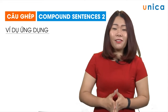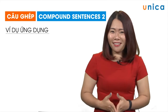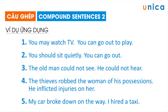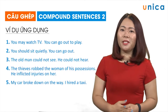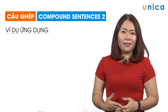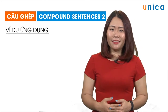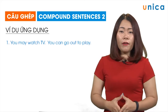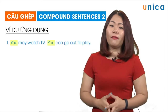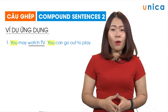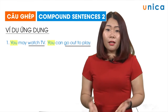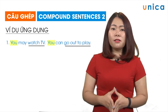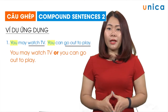Và bây giờ chúng ta hãy cùng thực hành thêm một vài ví dụ nữa nhé. Đừng quên rằng chúng ta phải thực hành càng nhiều thì càng nhớ được lâu. Hãy nối các cặp câu đơn sau để có một câu ghép. Ví dụ số một: 'You may watch TV. You can go out to play.' Chúng ta thấy là hai câu này có cùng chủ ngữ là 'you' và hai hành động — watch TV và go out to play — không thể diễn ra đồng thời. Vậy nên chúng ta dùng từ nối chỉ sự lựa chọn là 'or': 'You may watch TV or you can go out to play.'